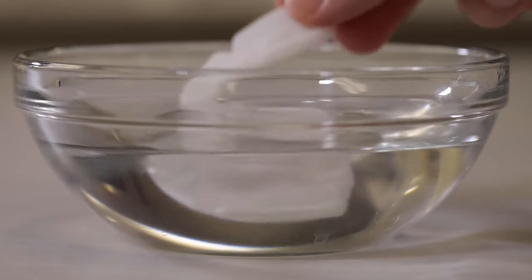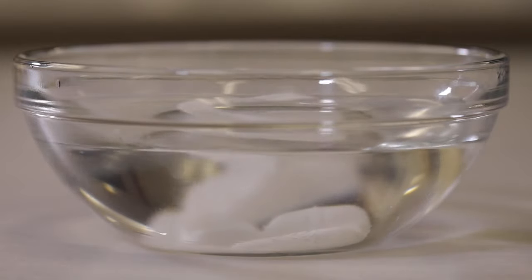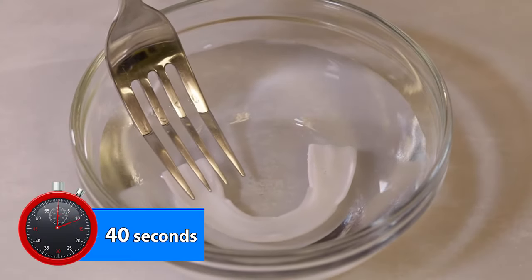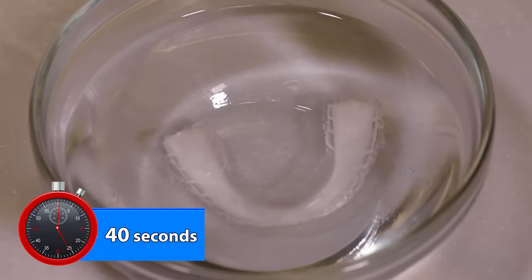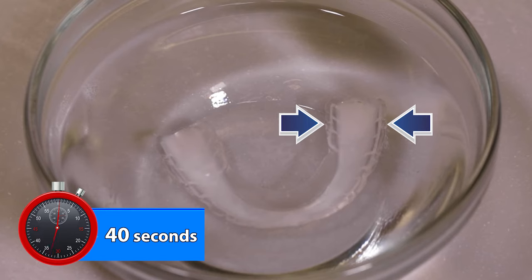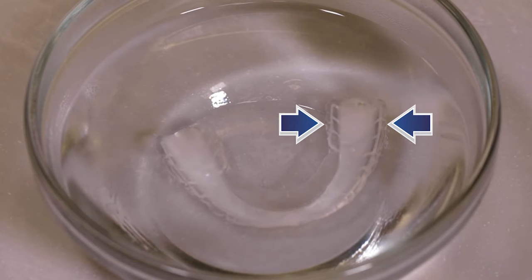Immediately remove the bowl from the microwave and submerge the dental guard in the hot water for about 40 seconds. If it floats, use the fork to push it down under water. The guard is ready when the outer edges turn clear and the white internal core is visible. If the outer edges do not turn clear, the water is not hot enough.